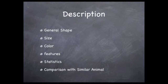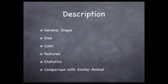Let's look carefully at the first item on our research list. The description would include the animal's general shape, its size, color, features, statistics, and its comparison to a similar animal. We've done this already with black bears and with deer in previous episodes.